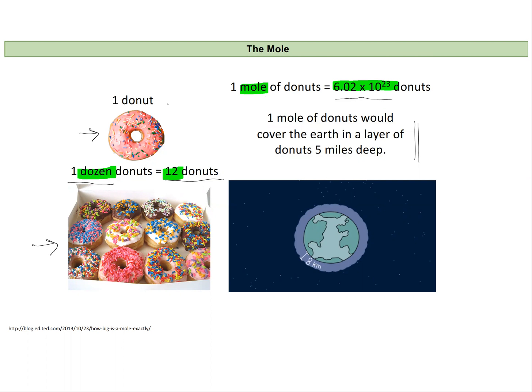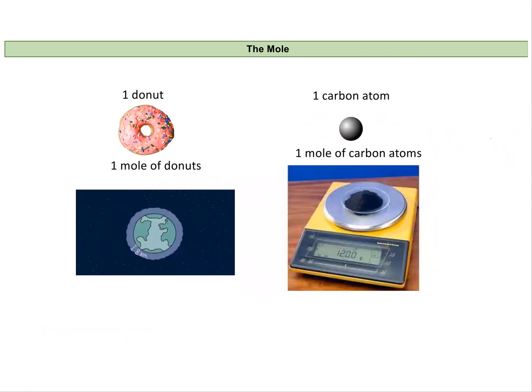But remember we usually use moles to talk about atoms and molecules which are much much much smaller than a donut. So while my one donut can also be discussed as a mole of donuts and that's a lot, if I have one carbon atom it's super itty bitty. But if I have a mole of carbon atoms I have something I can observe on the macroscopic scale. And it's not nearly as big as five miles of donuts above your head. Instead it looks like a small pile that you could hold in your hand and its mass would be 12 grams.